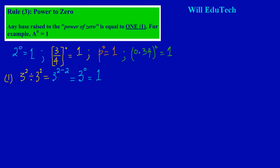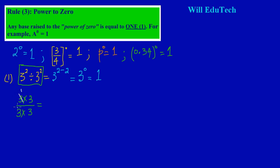Now let's look at it another way. Three squared divided by three squared can be written as three times three, divided by three times three. Cancelling: three into three goes once in each case, leaving one on top and one on the bottom.